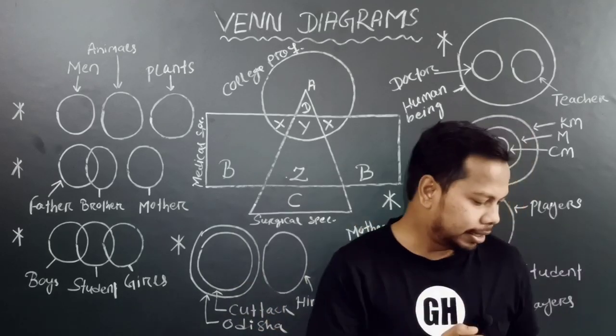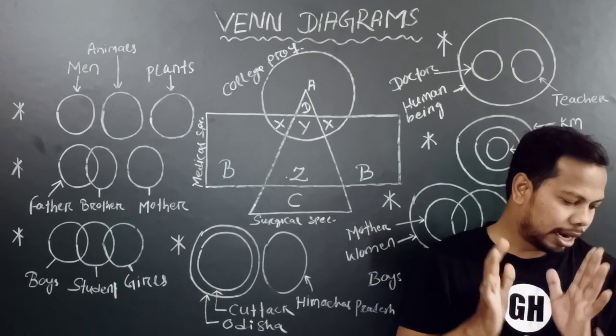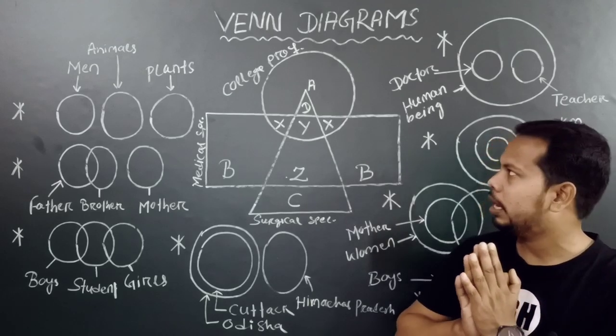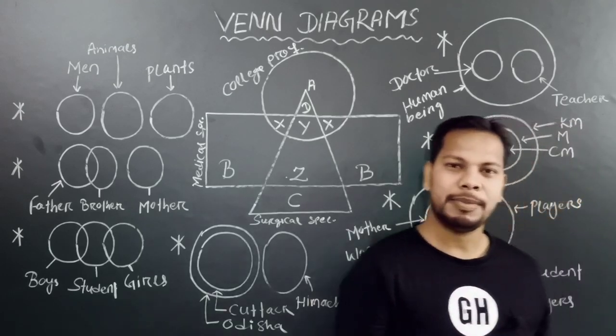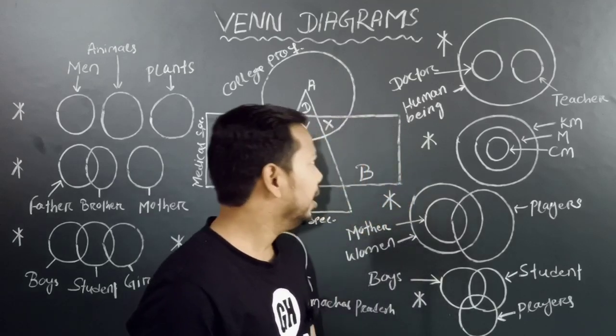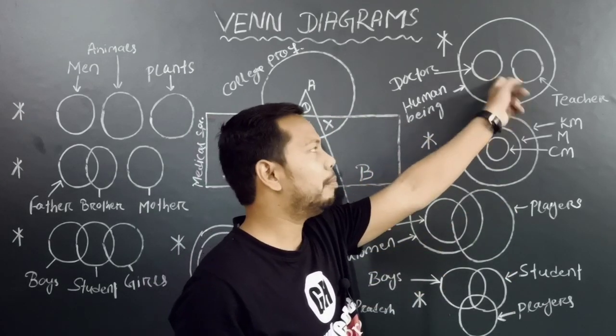Next, this example is banana, apple, fruit. So which diagram represents banana, apple, fruit? If you know which is the same category, then you can select the correct diagram. Banana, apple, fruit.